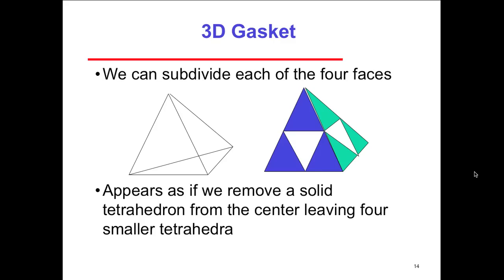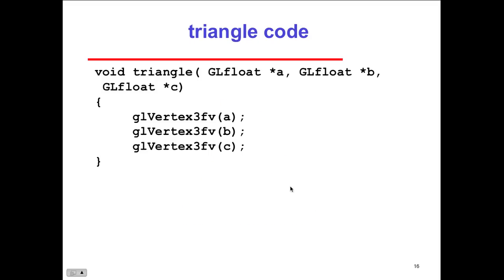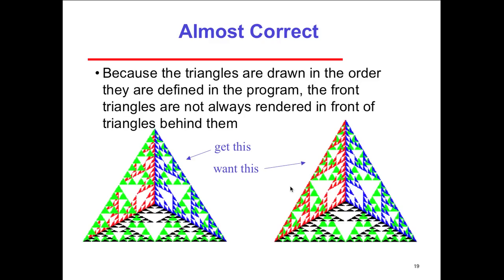Let's draw a three-dimensional one. So we can subdivide each one of the four triangles. So it appears if we remove the solid tetrahedron from the center, leaving four smaller ones in here, we've got a little bit more sophisticated three-dimensional looking gasket. Here's an example after five iterations. We've got each one of the iterations is drawing more triangles inside of the triangles. Here's our triangle code, subdividing code, our code for the tetrahedron. Almost correct. So we get this, we want that. Just slightly. Actually, it looks pretty good. I can't even tell the difference.